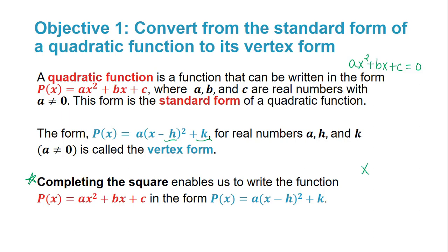Recall that if we have something of the form x squared plus bx, to determine the number that completes the square we take half of b and square it. That is, b divided by 2, quantity squared, gives us a number that will complete the square to make a perfect square trinomial.